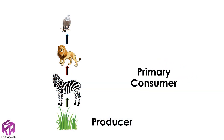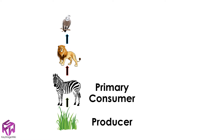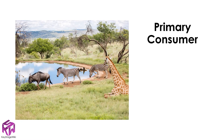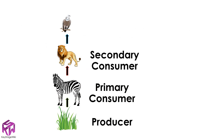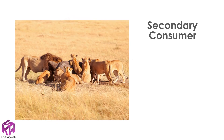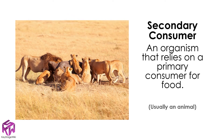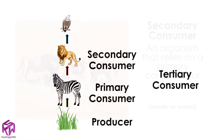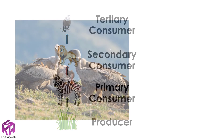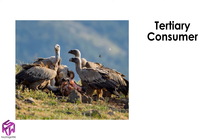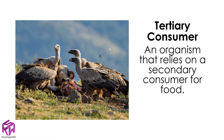The trophic level above producers is known as primary consumers — in this example, zebra. These are organisms that rely on producers for their food. At the third trophic level we have secondary consumers — in this case, a lion. These are organisms that rely on primary consumers for their food. Finally, on the fourth trophic level, we have tertiary consumers — in this example, a vulture. These are organisms that rely on secondary consumers for their food.